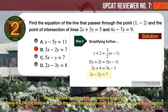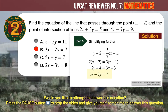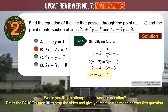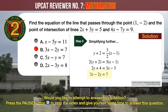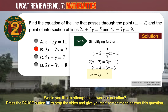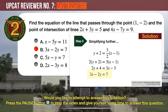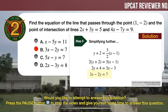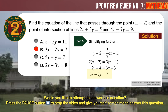Step 5: simplify the equation further by multiplying both sides by 2, and we eventually arrive at 3x minus 2y equals 7, which is the equation of the line passing through the point x equals 1 and y equals minus 2, and the point of intersection of lines 2x plus 3y equals 5 and 4x minus 7y equals 9.